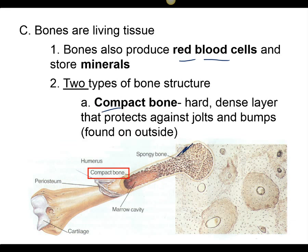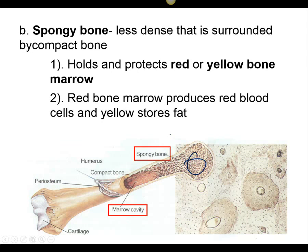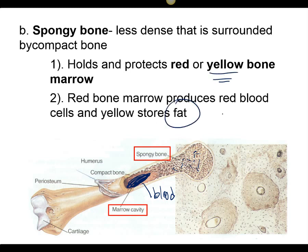Compact bone is the really dense outer part. And then spongy bone is the inner part that is not as compact — that's where you'll find a lot of our bone marrow. There are two types of bone marrow: red bone marrow, which produces our blood cells, and yellow marrow, which is pretty much fat storage. The spongy bone is porous with holes — it's not as thick as compact bone. It allows our bones to be strong yet light because it's not completely solid.